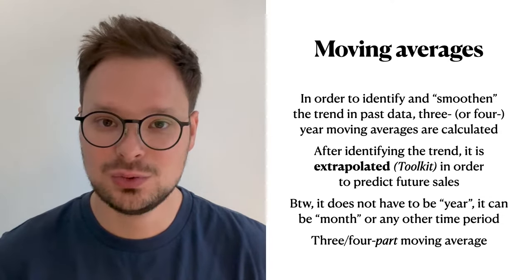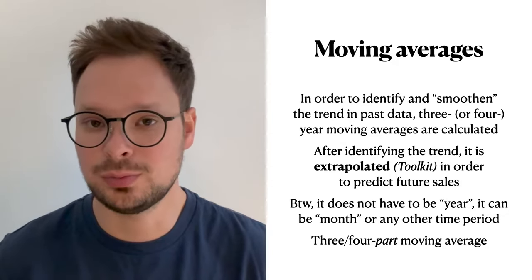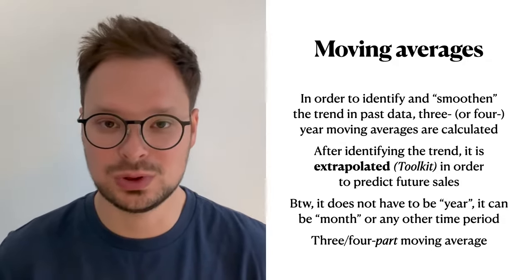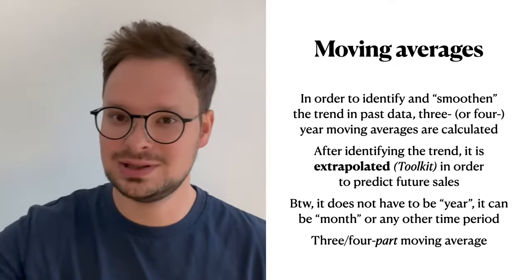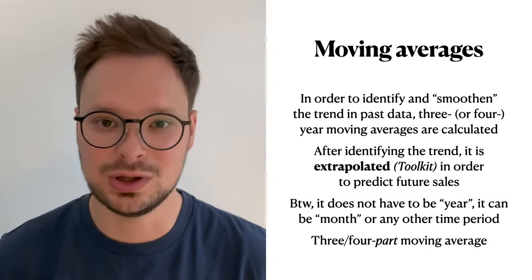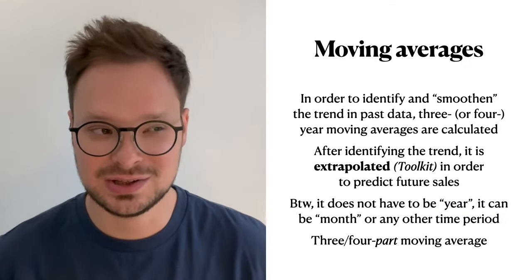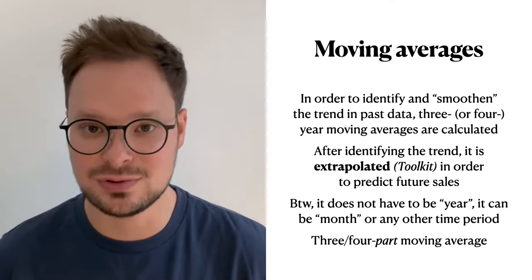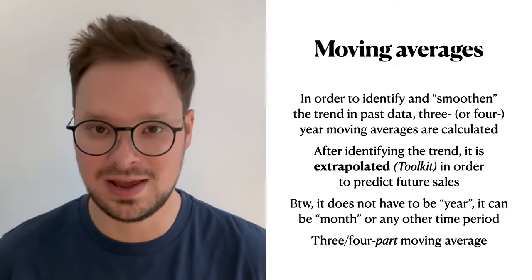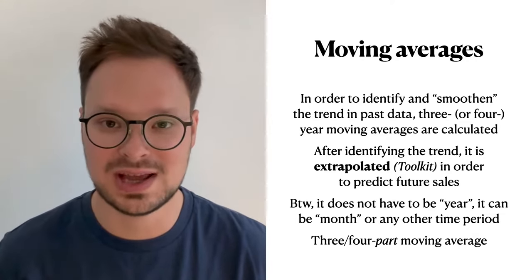Moving averages. One thing that you can do is just record past data per year, or per month, or per week, or per whatever time period, and build a chart and a trend. But this trend will look really jumpy. So in order to smoothen the trend, whoever is in charge of sales forecasting is usually calculating three-part moving averages, or four-part moving averages. The part can refer to either year, or month, or week, or whatever time period.